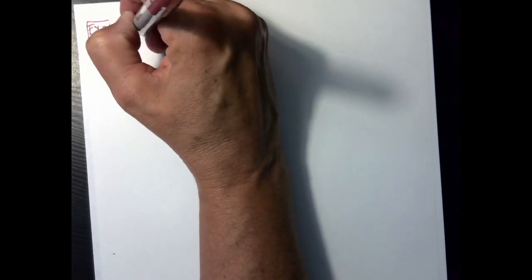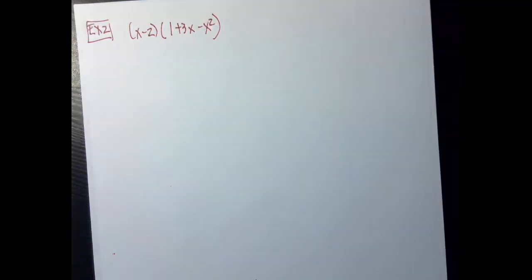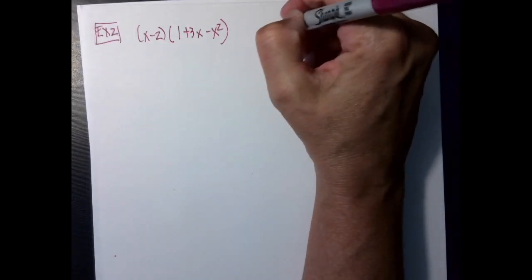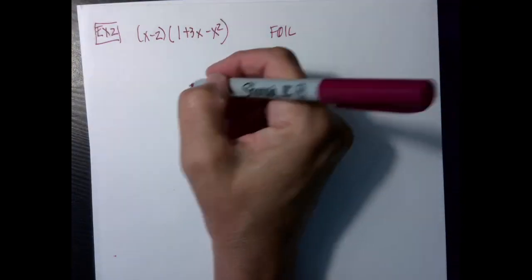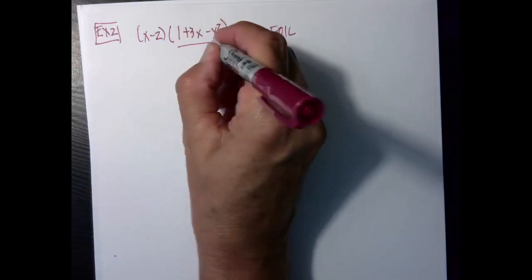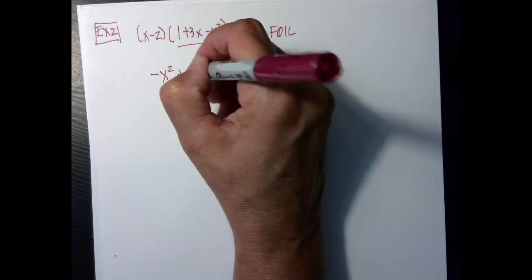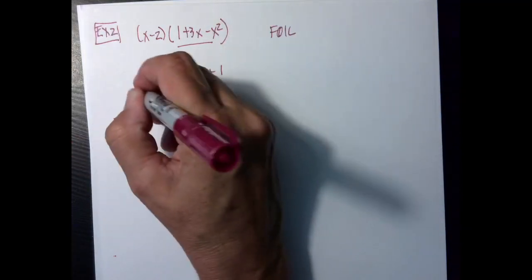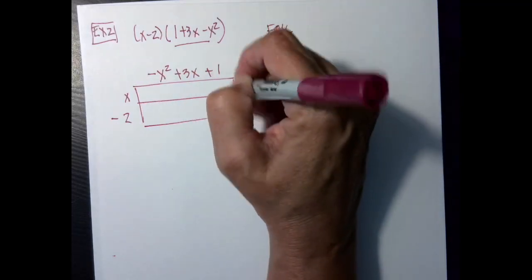I'm going to have x minus 2 times 1 plus 3x minus x squared. Technically I could do FOIL — you learned that in Algebra 1 — but I prefer to do the box method. So I'm going to put this in standard form: negative x squared plus 3x plus 1. And then on the left-hand side I'm going to have x minus 2, and I'm going to draw my cute little box.